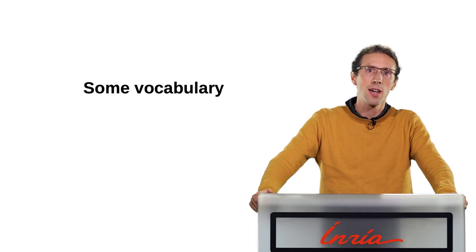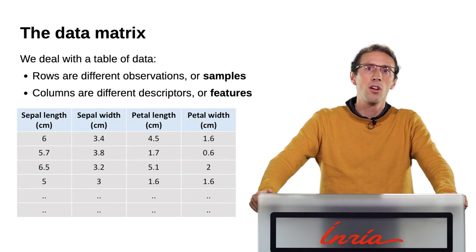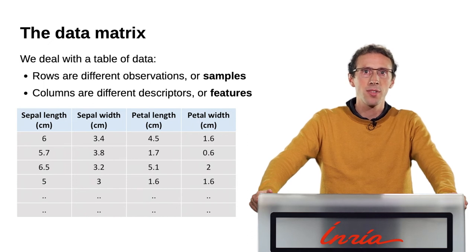To go further, it is useful to define a bit the concepts of machine learning. All the data that we will consider will be in what we call a data matrix. It can be seen as describing our problem in a 2D table. The different rows of this table are different observations. For instance, different irises. We call these samples. The columns of this table give the different measures or descriptors that we have for these different samples. We call these features.